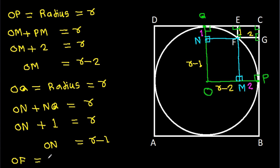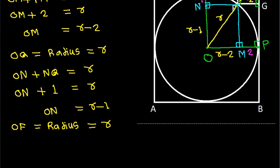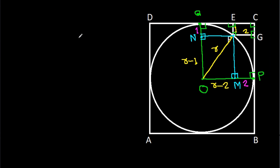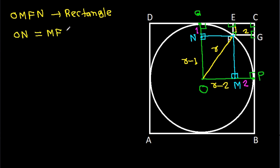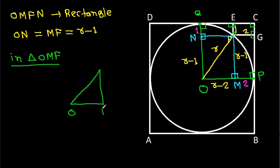OF is also a radius, so OF equals R. Now, OMNF is a rectangle, so MF equals ON, which gives MF equals R minus 1. In right triangle OMF, the angle at M is 90 degrees, with OM equals R minus 2, MF equals R minus 1, and OF equals R.